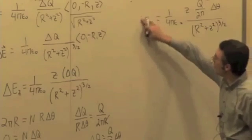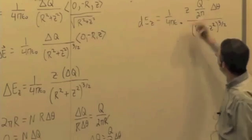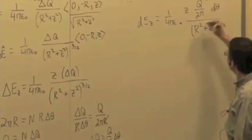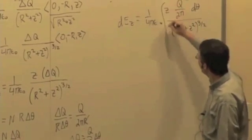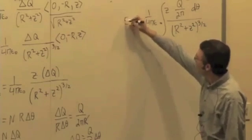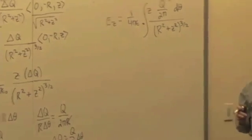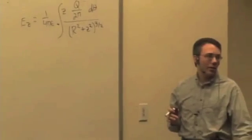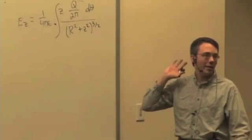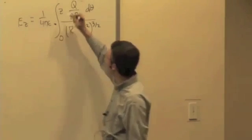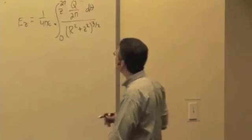We want to sum this up. We want to turn this into infinitesimals and do an integral. An integral from where to where? 0 to 2 pi. We're summing up over the entire circle, so 0 to 2 pi radians.